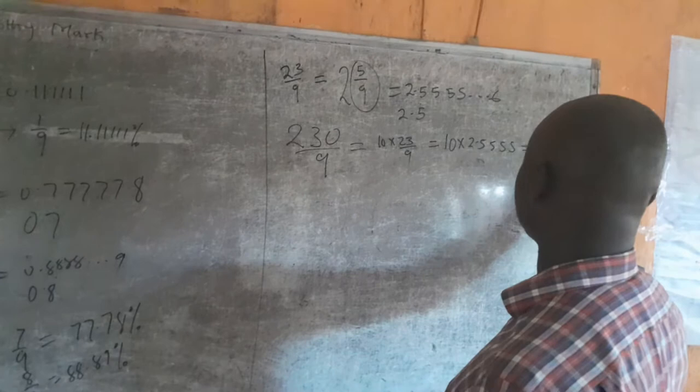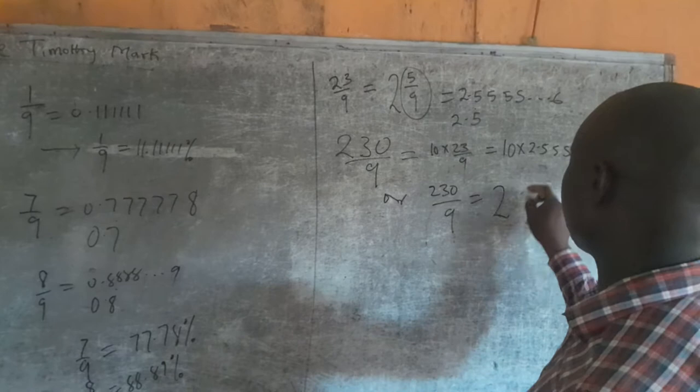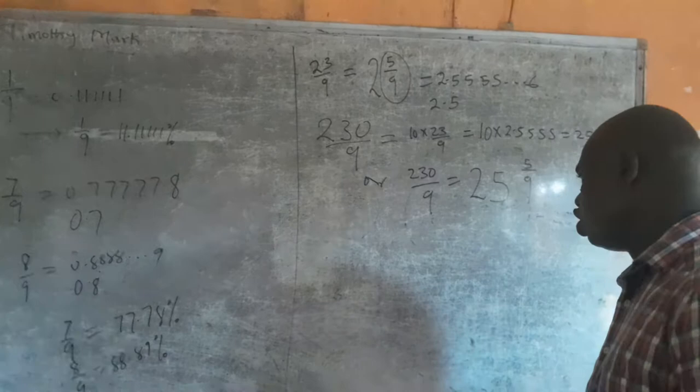230/9 is 25 whole number 5/9, because 25 times 9 is 225. So that remainder 5/9 will give you 0.555, making it 25.555.